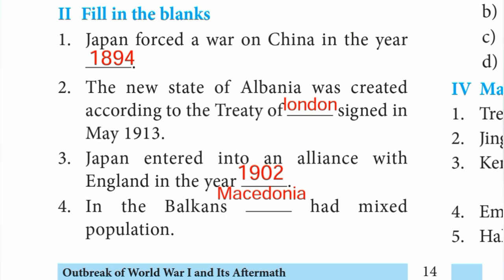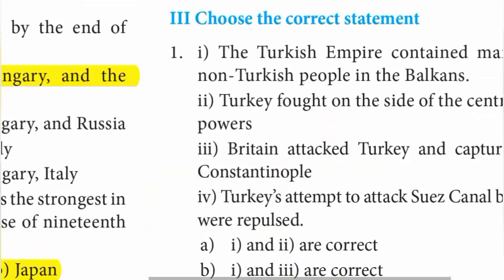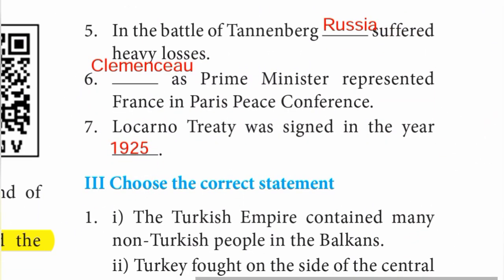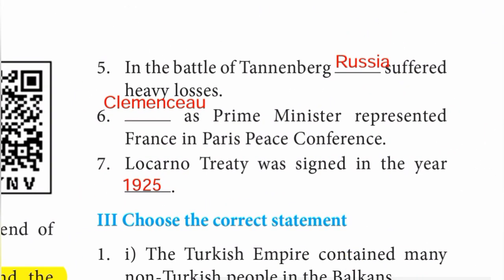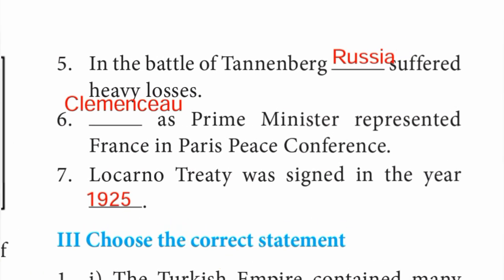Fourth: in the Balkans, Macedonia had mixed population — answer is Macedonia. Fifth one: in the Battle of Tannenberg, Russia suffered heavy losses — answer is Russia. Sixth: Clemenceau as prime minister represented France in the Paris Peace Conference — Clemenceau is the answer.